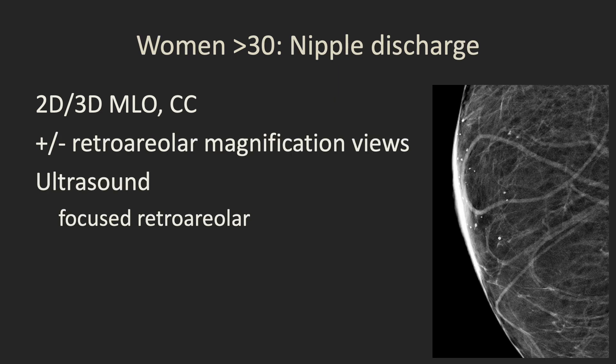Women over 30 with nipple discharge will again get the 2D, 3D, MLO, and CC. You can consider retroareolar magnification views looking for subtle calcifications, though in my experience if it's a high-quality mammogram those are really not necessary. We will then do ultrasound in the focused retroareolar area.